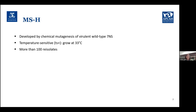Something happened during the years people were using the MSH vaccine: farmers were still complaining that birds were getting sick again and again, questioning whether the vaccine was still working or still attenuated. So people in the APCO Lab started to get re-isolates of MSH from the field and study them to see what was going on. Whole genome sequencing of MSH showed that there are 32 mutations in this strain compared to wild-type 7NS.